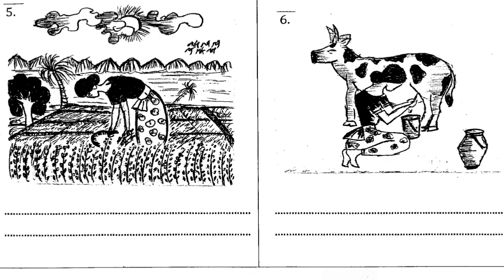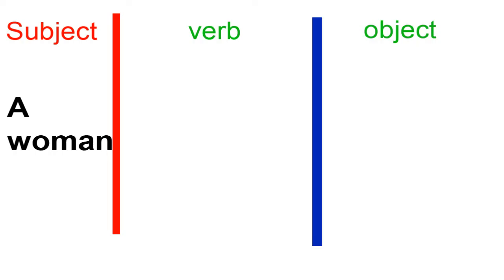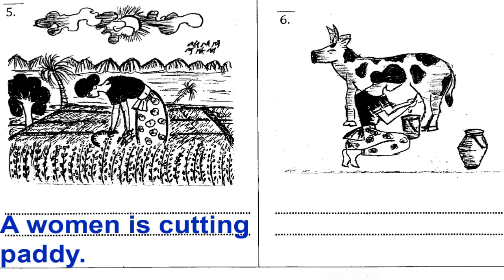Okay, look at the fifth picture. There's a woman. What's the kriyava? The verb in -ing form: cutting. A woman is cutting paddy.